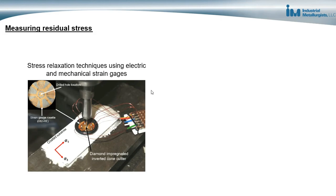There are a few ways of measuring residual stress. One common method uses stress relaxation techniques with electric and mechanical strain gauges. The strain gauges are attached to the metal, which is then drilled away in successive increments. As the metal is drilled away, the residual stress is evaluated.